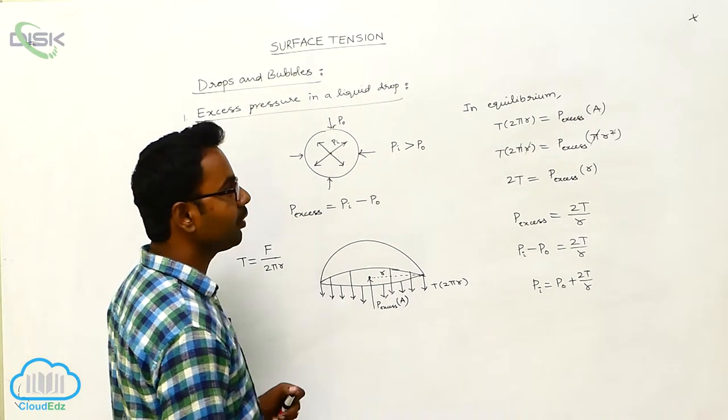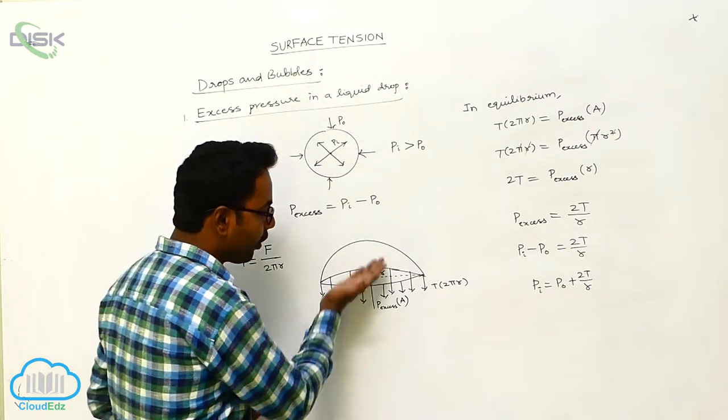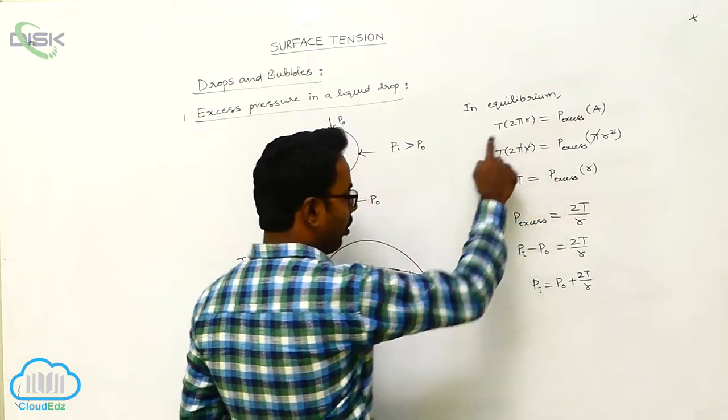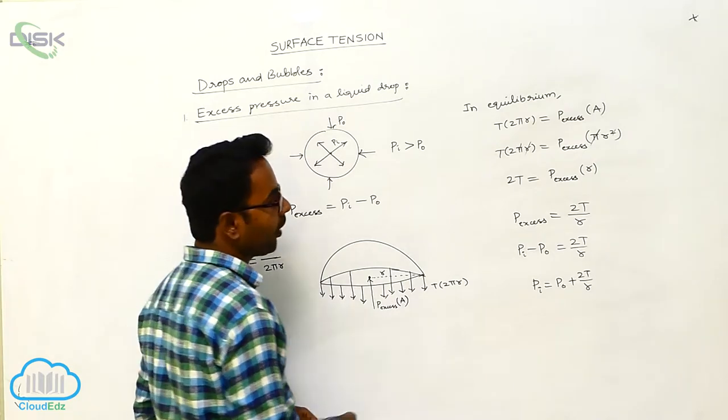Now in an equilibrium position, the upward force is equal to the downward force. The upward force is Px into A and downward force is T into 2πr.